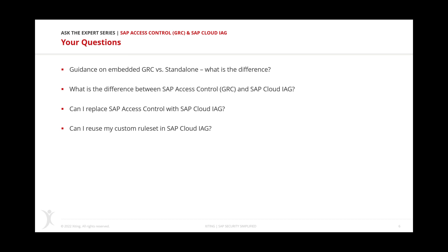The approach to building rules is very similar to Access Control — from an architectural perspective, the rule set is still very similar. With IAG, whether standalone or in combination with Access Control via the IAG bridge, you can build cross-system SODs. For example, you can have an SOD between an on-premise system like S/4HANA and a cloud application like Ariba, and IAG would analyze cross-system risks for your users.